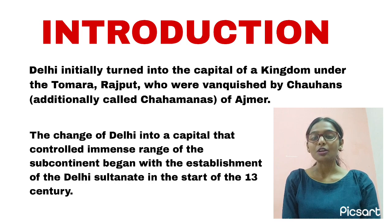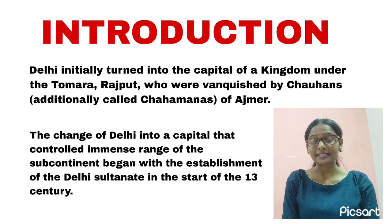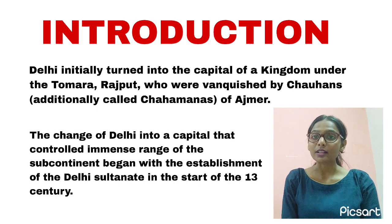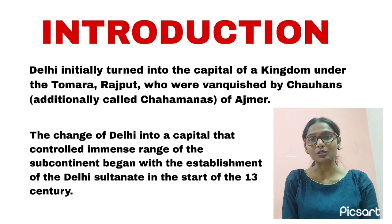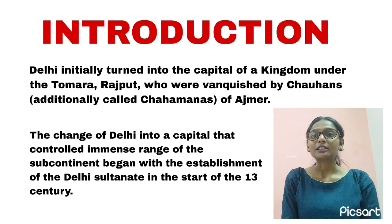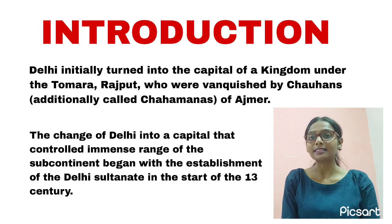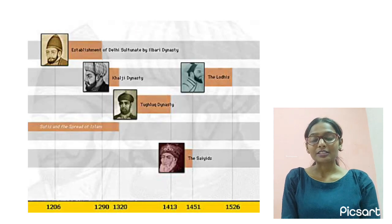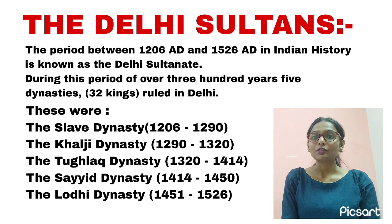In 1206, Ghori appointed one of his generals, Qutbuddin Aibak, as the governor of Delhi. Thus was established the first Muslim dynasty in the Indian subcontinent, then called the Mamluk dynasty. From 1206 to 1526, Delhi was ruled by many rulers of different Muslim dynasties. After Qutbuddin Aibak, they preferred the title of Sultan, and so this period came to be known as the Sultanate period, or the Delhi Sultanate. It started with the Mamluk dynasty, also known as the Slave dynasty, followed by the Khilji, the Tughlaq, the Sayyid, and the Lodi dynasties.